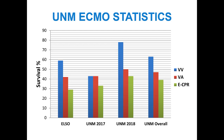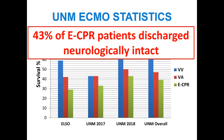Looking at UNM's data — on the left is ELSO, the national average survival rate for ECPR candidates. The veno-venous category is in blue, veno-arterial in red, and cardiac arrest patients in green. UNM is exceeding the national average pretty significantly in all three categories. Right now UNM has been doing this for about two and a half years and 43 percent of our ECPR patients have been discharged neurologically intact, compared to the national average of about 28 percent. It all comes down to selecting the right patients.